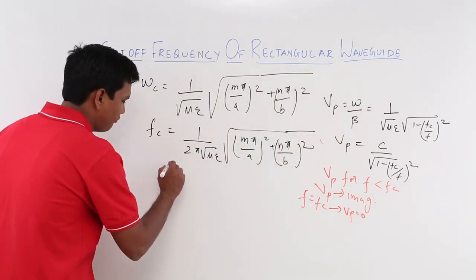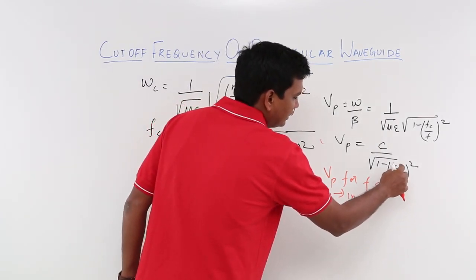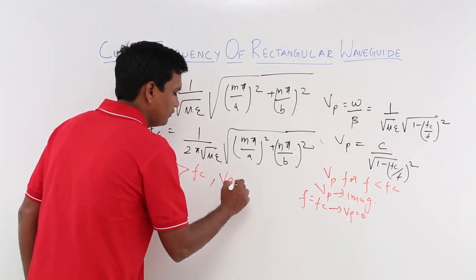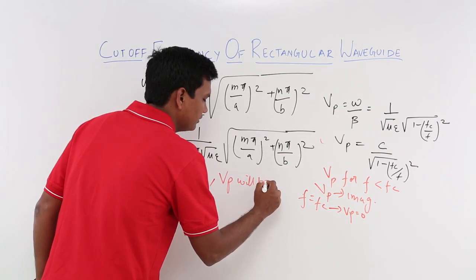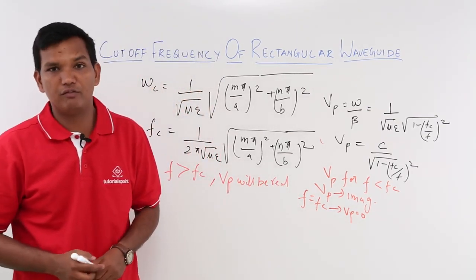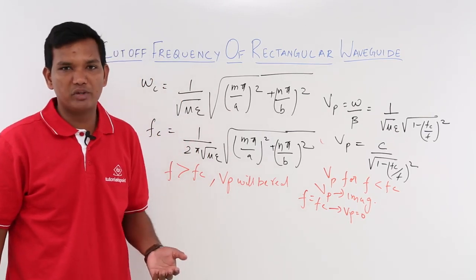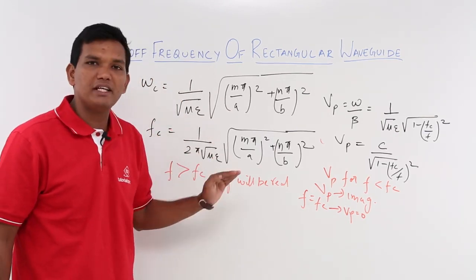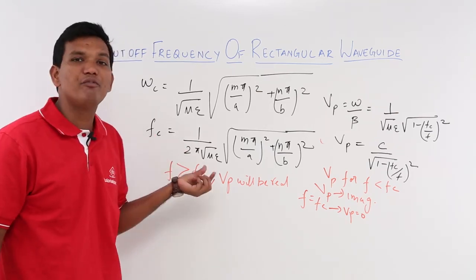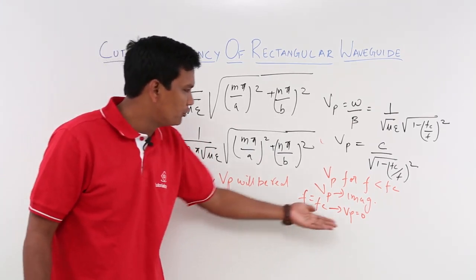The last case: if f is greater than f_c, then (f_c/f) is less than 1, so the quantity under the square root is a real positive number. It means v_p will exist and will be real. So your phase velocity exists and your wave will travel. What we conclude is: if you want your wave to travel, you have to apply a frequency greater than the cutoff frequency. The minimum frequency for the wave to travel is the cutoff frequency.